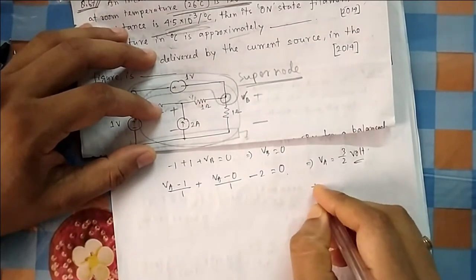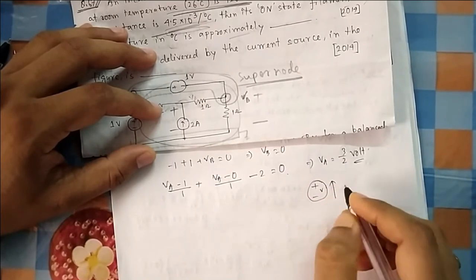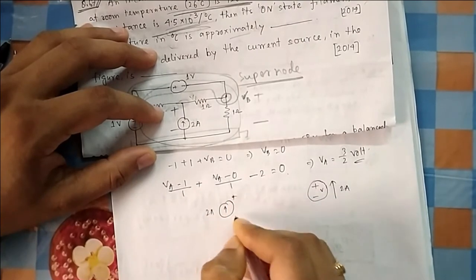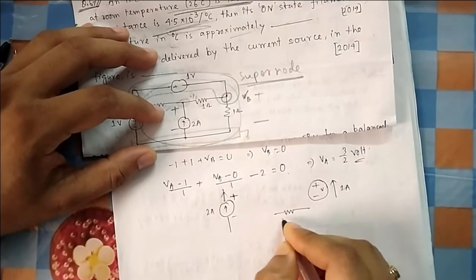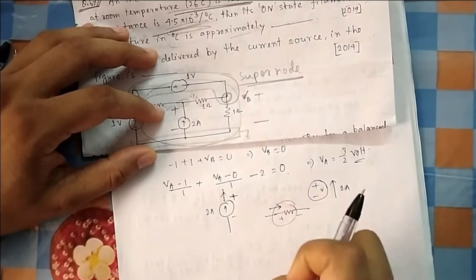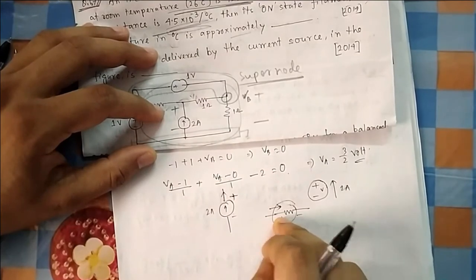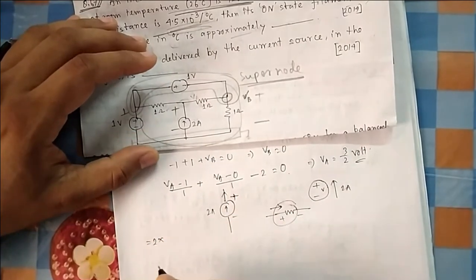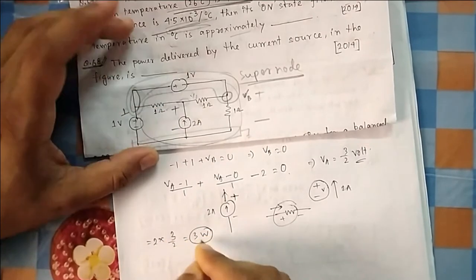VA = 3/2 volt and it is positive, so this terminal is positive and the other is negative. For the current source of 2 ampere: current is coming out of the positive terminal, so by generator/source convention it is delivering power. Power delivered = 2 × 3/2 = 3 watts.